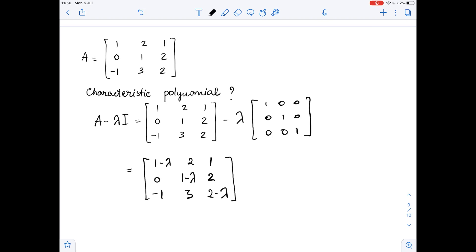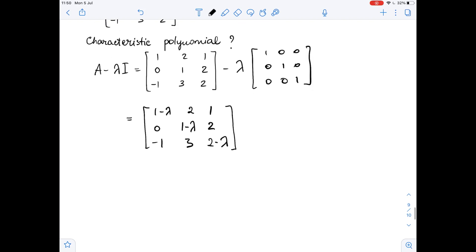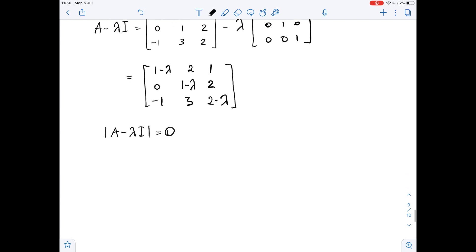The characteristic polynomial of a matrix is given by the following equation: the determinant of A minus lambda times the identity matrix equals 0